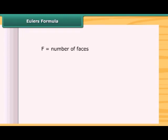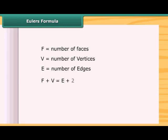If F stands for number of faces, V stands for number of vertices, and E stands for number of edges, then the Euler's formula is F plus V is equal to E plus 2. That is, F plus V minus E is equal to 2.